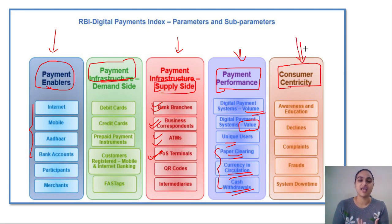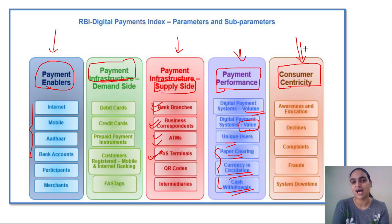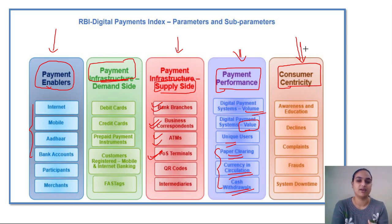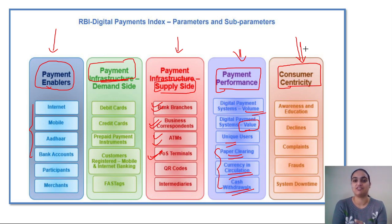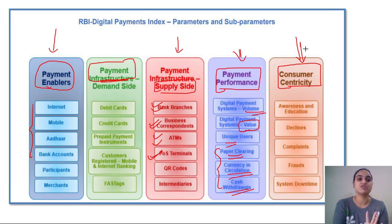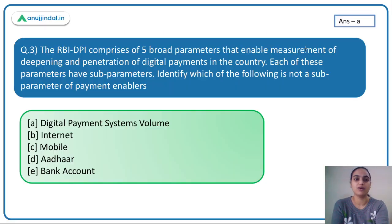Consumer Centricity has the least weightage of 5% and tracks the extent of customer awareness, the types of complaints arising, the kinds of frauds happening with these services, and system downtime — like server being busy when a payment doesn't go through. All such complaints and issues are tracked under this parameter. These are the five major parameters of this index.